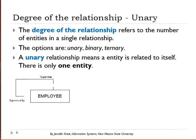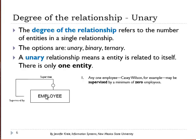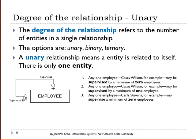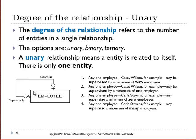A unary relationship means that an entity is related to itself. In the example here, any one employee — Casey Wilson — may be supervised by a minimum of zero employees and a maximum of one employee. Reading from the other end, any one employee — Carla Stevens, for example — may supervise a minimum of zero employees and a maximum of many employees.